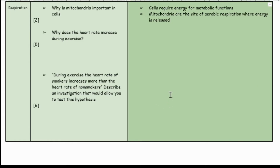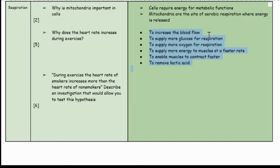The next question: why does the heart rate increase during exercise? This was a five marker, so think about every intricate step. The answer: in order to increase blood flow and supply more glucose for respiration, supply more oxygen for respiration, supply more energy to the muscles at a faster rate, enable the muscles to contract faster, and to remove lactic acid. The blood carries substances like glucose and oxygen needed for respiration and carries out the energy produced.